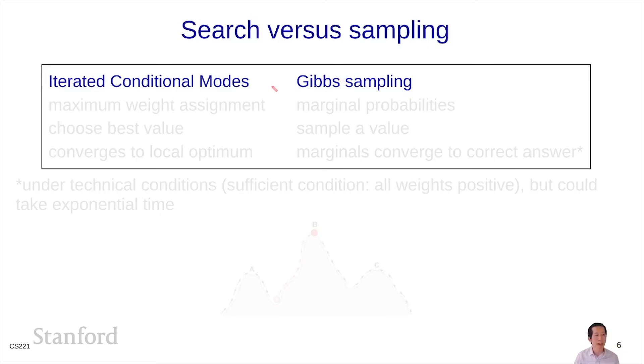The first salient one is that iterated conditional modes was for solving CSPs, where we're trying to find the maximum weight assignment. Gibbs sampling is for Markov networks, where we're trying to compute marginal probabilities. As a consequence, for ICM, at each step, we're choosing the value to assign to a variable which maximizes weight. Whereas in Gibbs sampling, we're using the weights to form a distribution and sampling from that distribution.